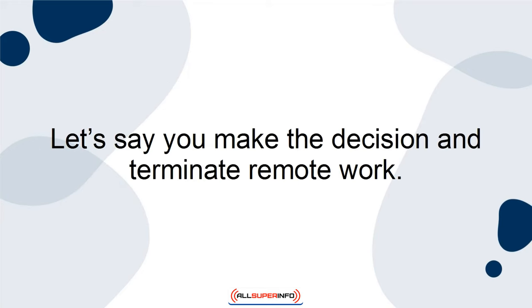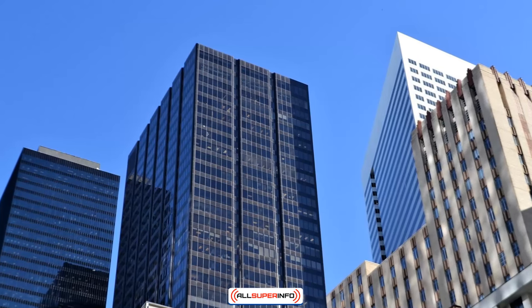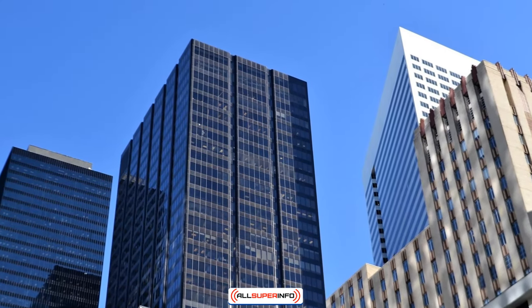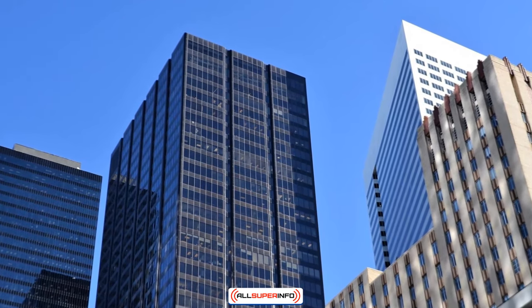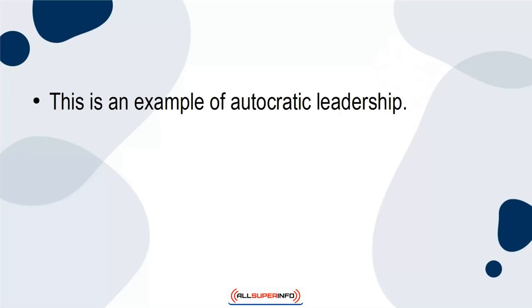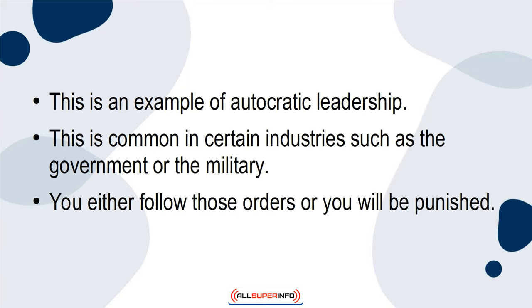Next, let's say you make the decision and terminate remote work. Everyone is back at the office, and that decision is final — no one gets a say on the matter. This is an example of autocratic leadership, which is common in certain industries such as the government or the military, where you either follow those orders or you will be punished.